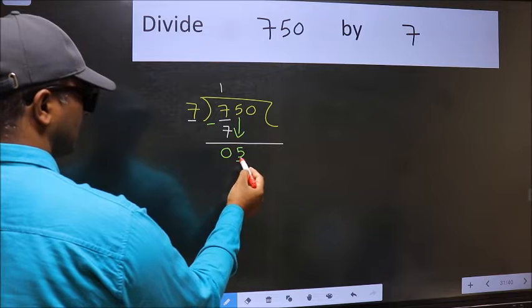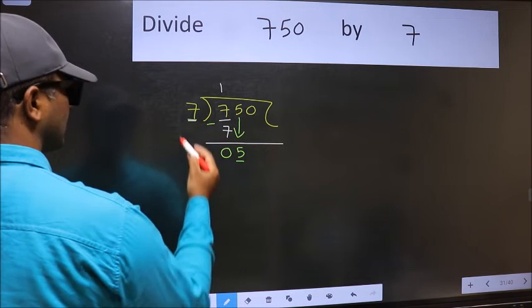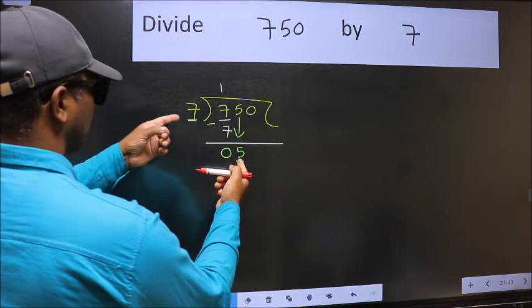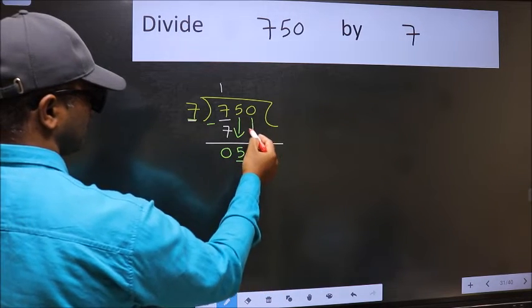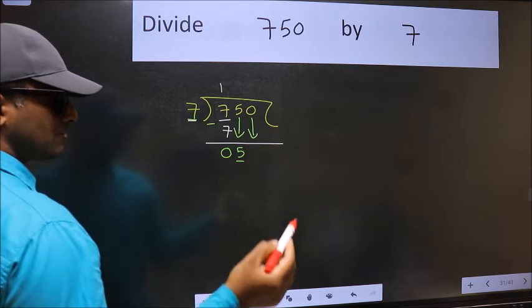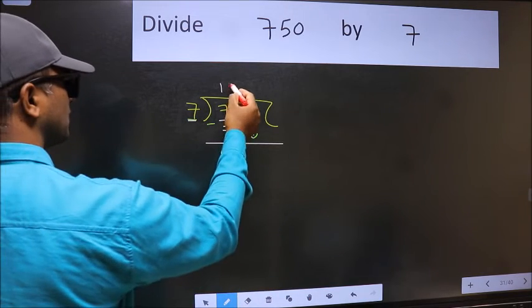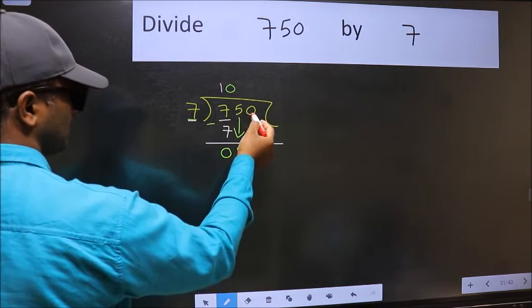Now we have five, and here seven. Five is smaller than seven, so we should bring down the second number. The rule to bring down the second number is we must put zero here, then only we can bring this number down.